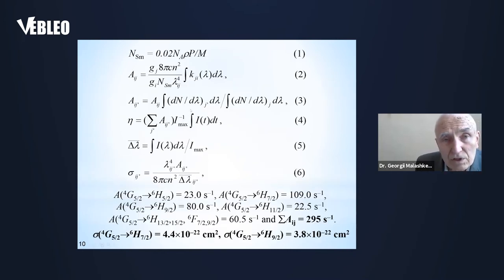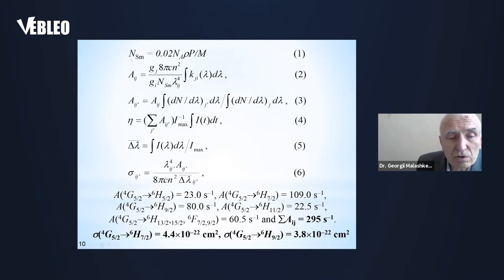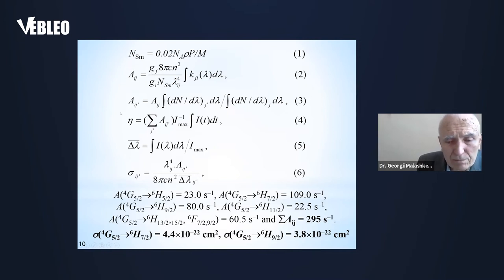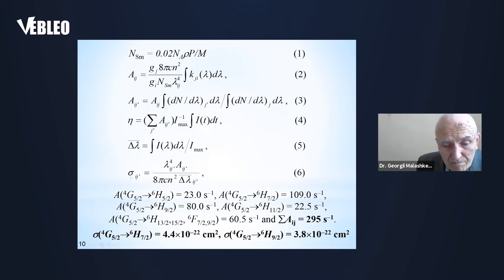It is seen that the most intense luminescence band lies at 600 and 618 nanometers. We use this known equation to determine the values of spontaneous transition probabilities, luminescence quantum yield, effective luminescence bandwidth, and peak cross-section of the transition.